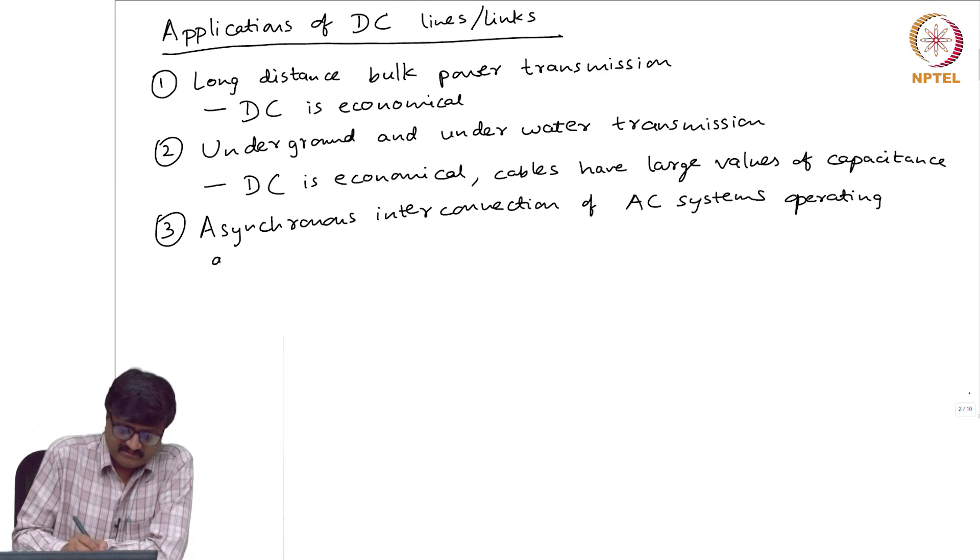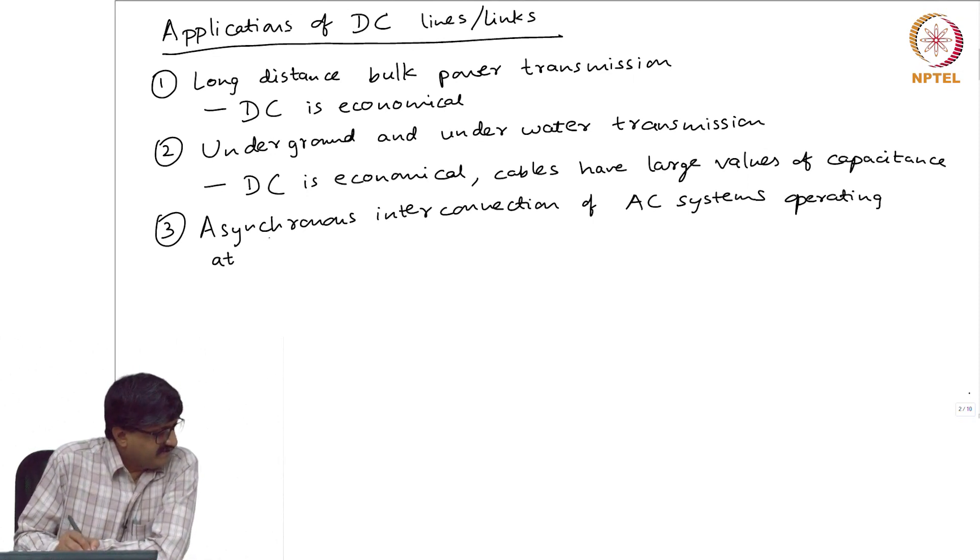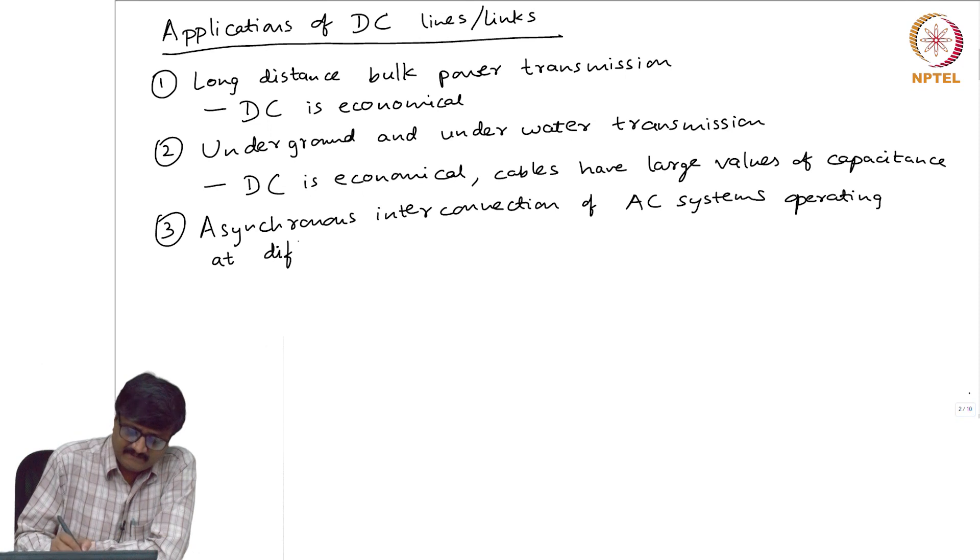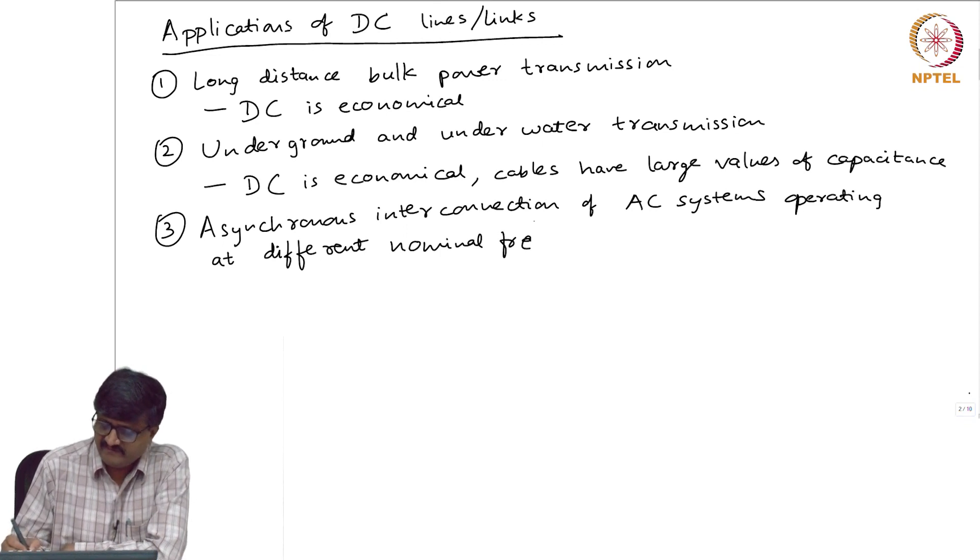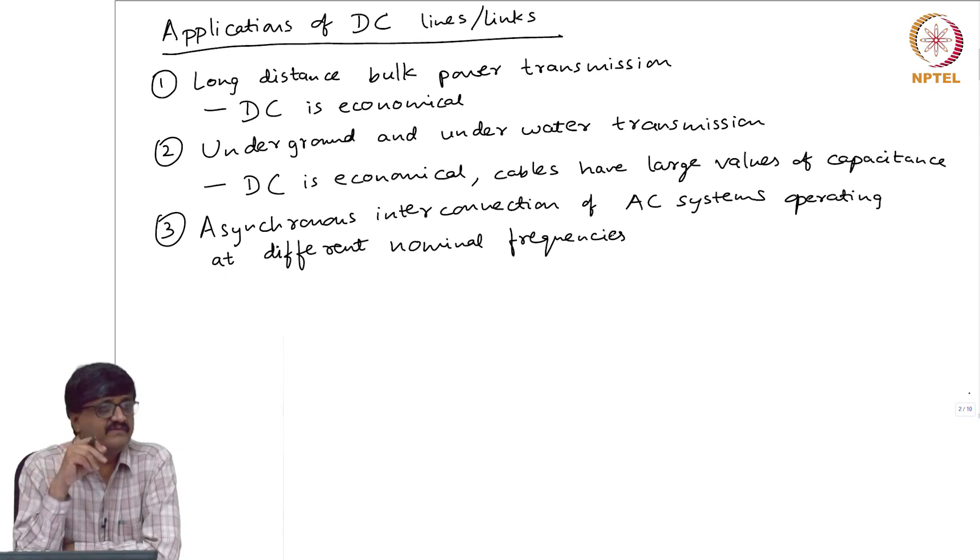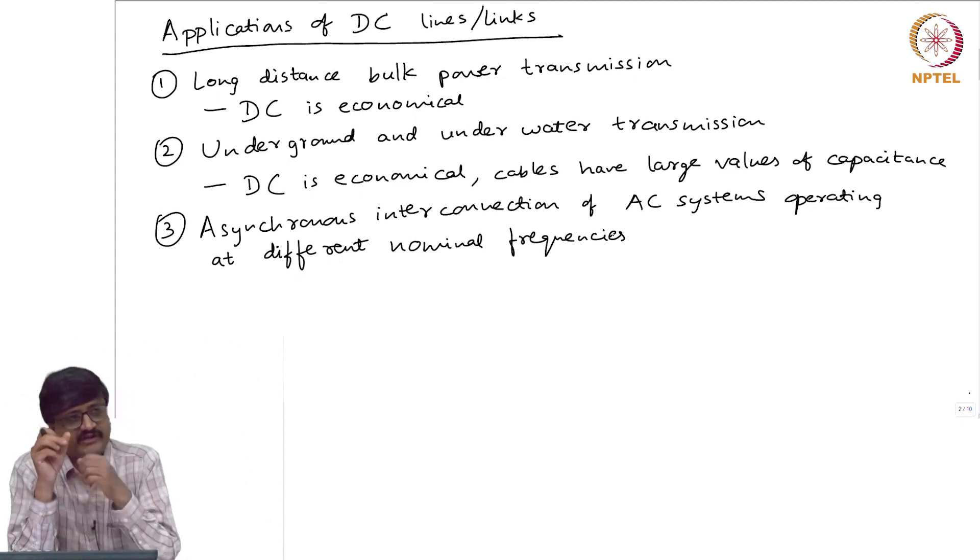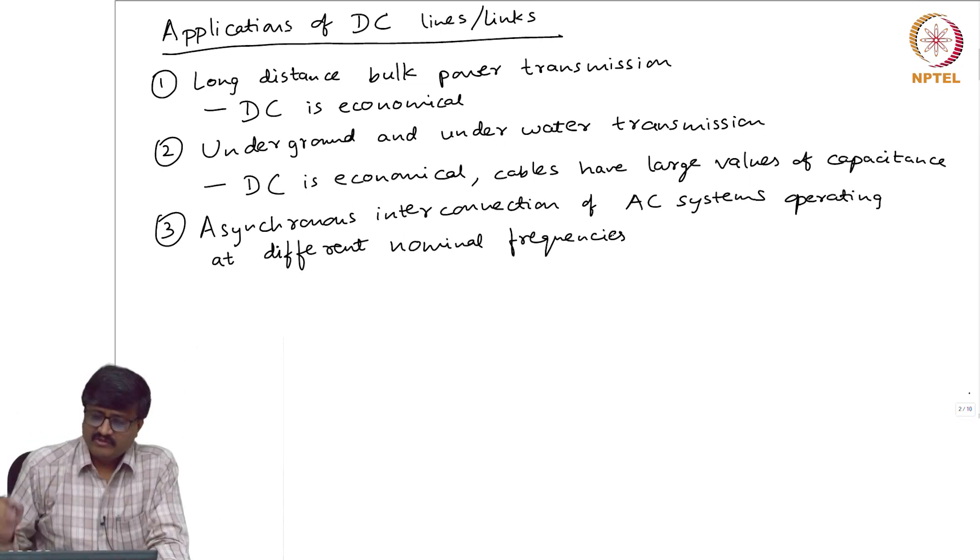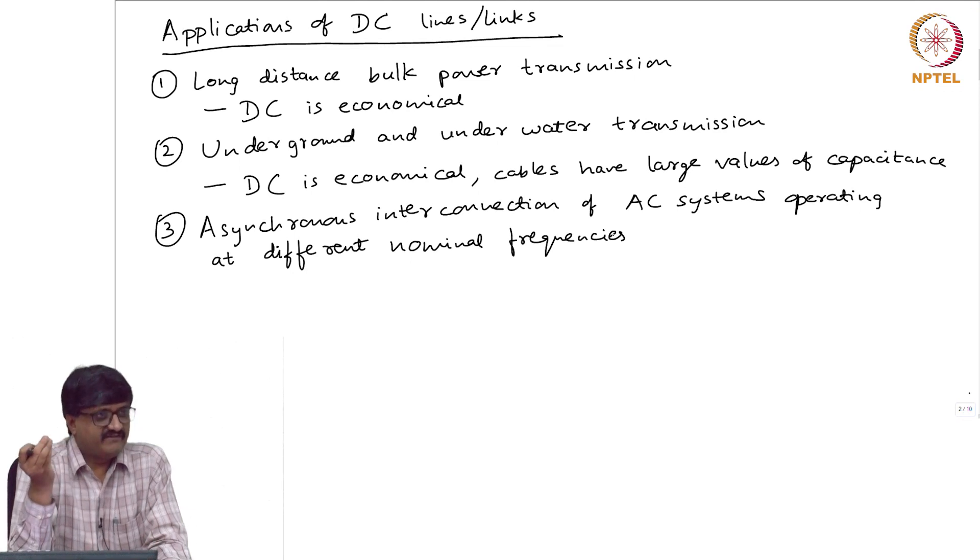One can say that these AC systems are operating at different frequencies. Most of the time when you say different frequency, what we mean is different nominal frequency. Suppose I have a system 50 hertz and another system 60 hertz I want to interconnect. This is one way of doing interconnection, we call that asynchronous. Different nominal frequencies actually means different rated frequencies.